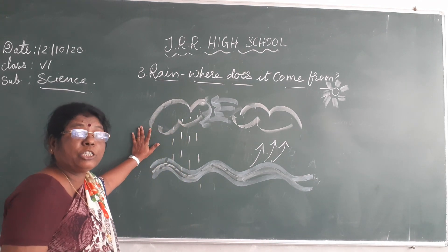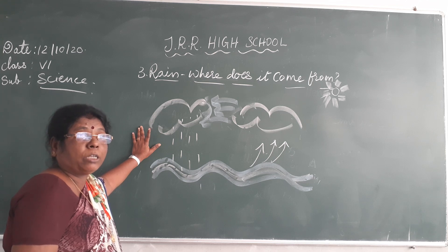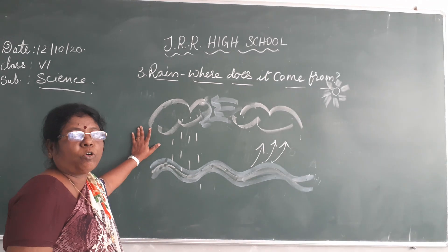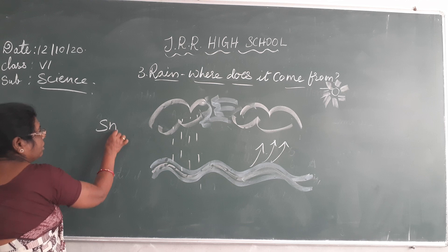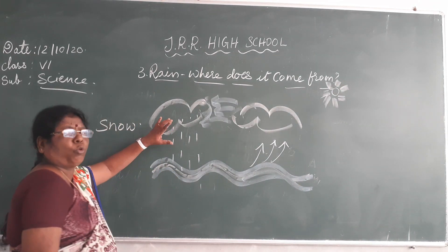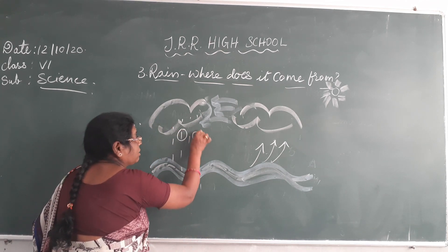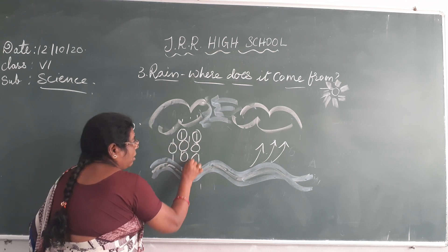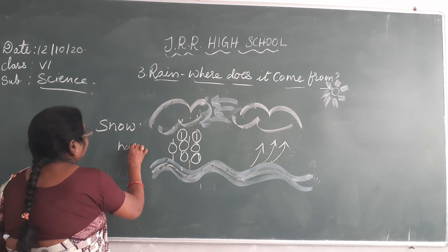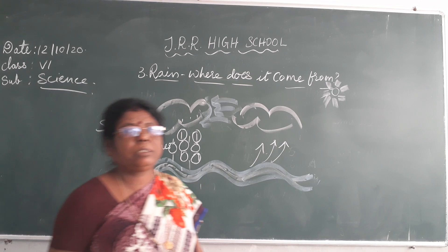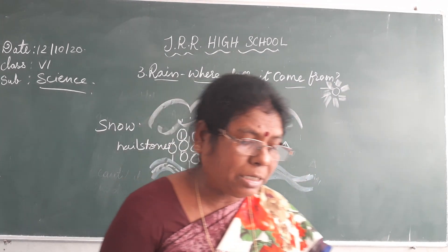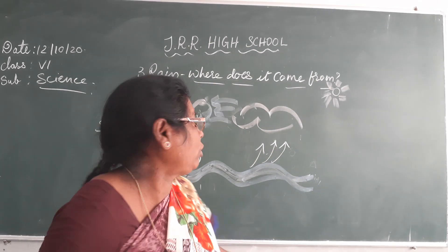Sometimes, if you go to hill stations — like Shimla, Kashmir, Himachal Pradesh — what happens there? The water vapor changes into ice crystals and falls on the surface. This is what you call snow. Water also solidifies and comes down in the form of ice cubes — these are called hailstones. Small pieces of ice fall down — that is what you call hailstones.